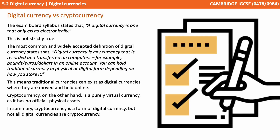We want to provide a little note here between digital currencies and cryptocurrencies. The example syllabus states that a digital currency is one that only exists electronically, but this is not strictly true. The most common and widely accepted definition states that digital currency is any currency that is recorded and transferred on computers — for example, pounds, euros, and dollars in an online account. You can hold traditional currency in a physical or a digital form depending on how you store it, meaning traditional currencies can exist as digital currencies when they're moved, held, and processed online.